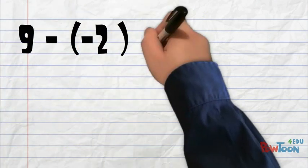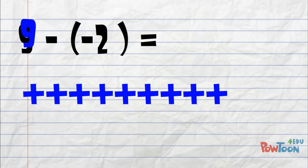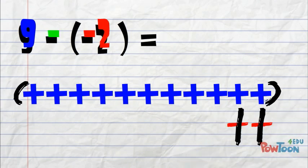Let's try another one. Positive 9 minus negative 2. Start with 9 positive tiles. Realizing we are short on tiles, we bring out two zero pairs. We take away negative 2. Our answer is positive 11.